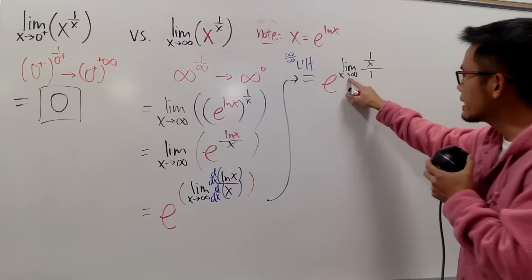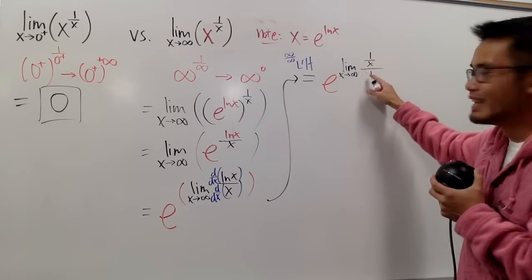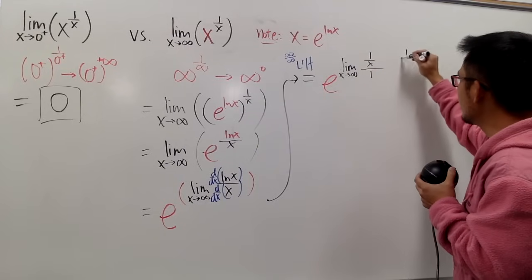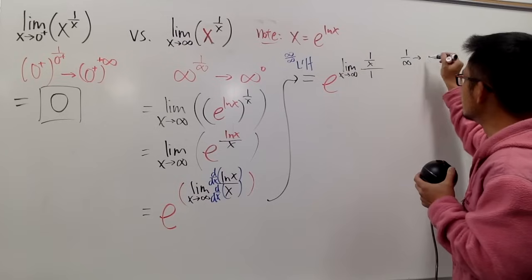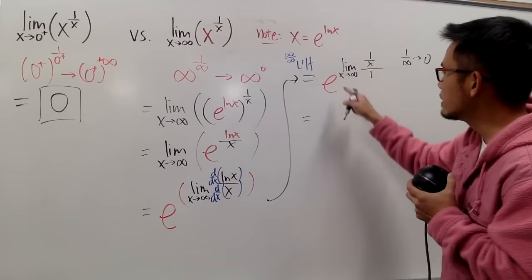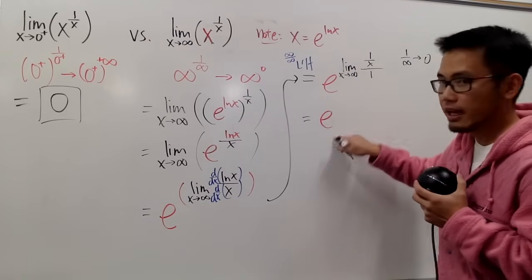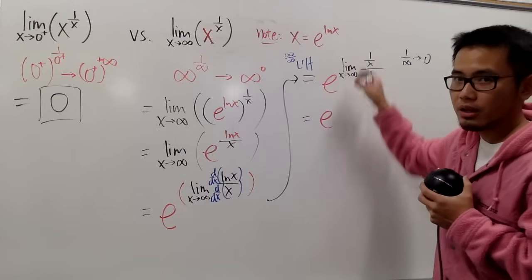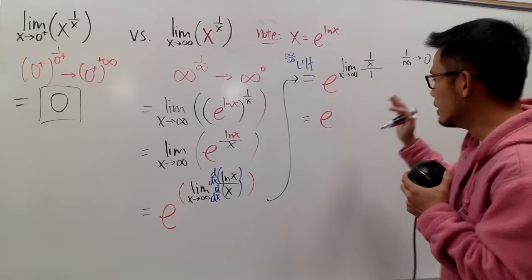Now, when we're plugging infinity into here, we get what? We pretty much just end up with 1 over infinity, which is 0. In another word, the e for the base stays, but this thing right here is 0. So, in all,